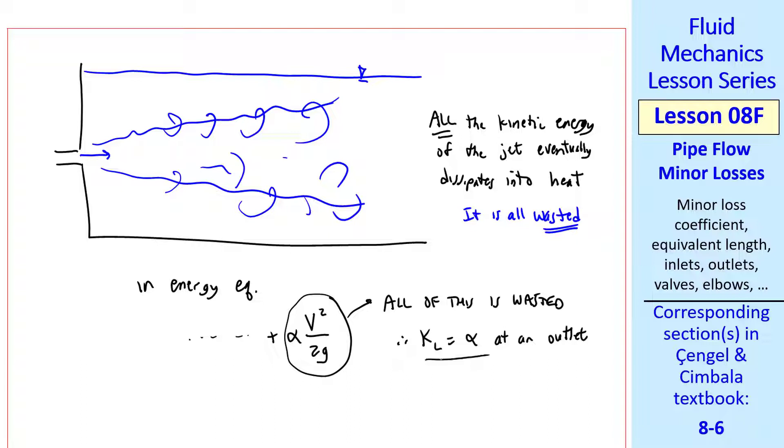Therefore, KL is alpha at an outlet, as we saw in the tables. I give a caveat that this holds for submerged outlets, where the jet is included in the control volume.